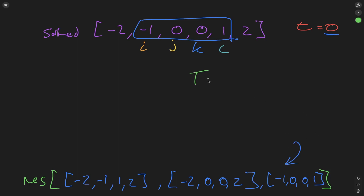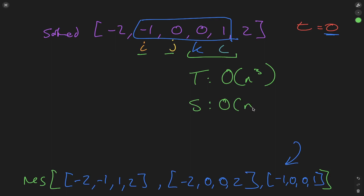The time complexity is O(n³) because we have two for loops for i and j, and then a while loop for k and l. Space complexity is O(n), where n is the length of the sorted array created at the start.